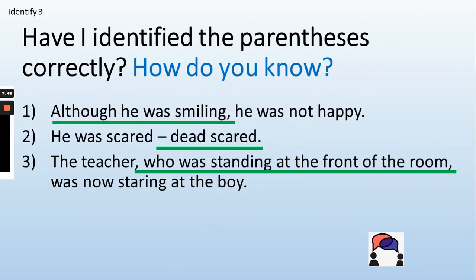Let's have another go. Have I identified the parenthesis correctly in all of my sentences? Pause the video and see what you think. My first example is not correct — 'although he was smiling' is an example of a fronted adverbial. My second example, 'he was scared — dead scared,' works perfectly; I've added extra information with a dash. My final example, 'the teacher, who was standing at the front of the classroom, was now staring at the boy' — the extra information has been added with a pair of commas.